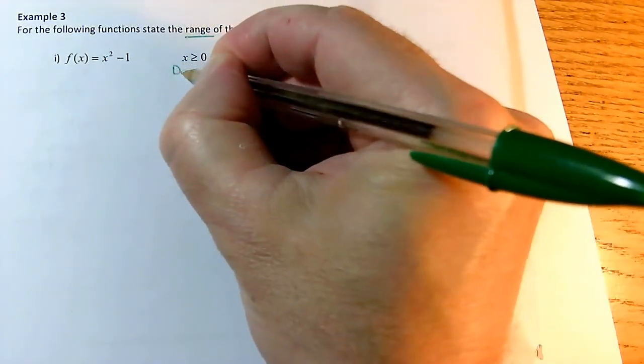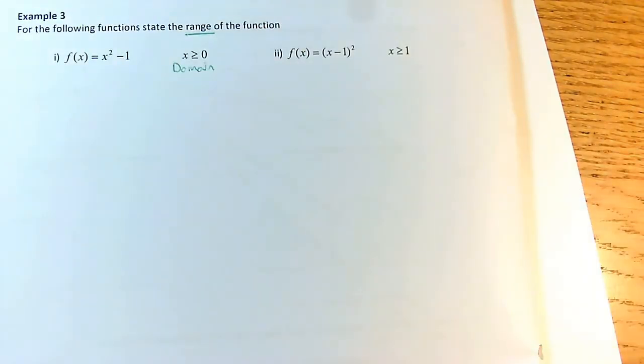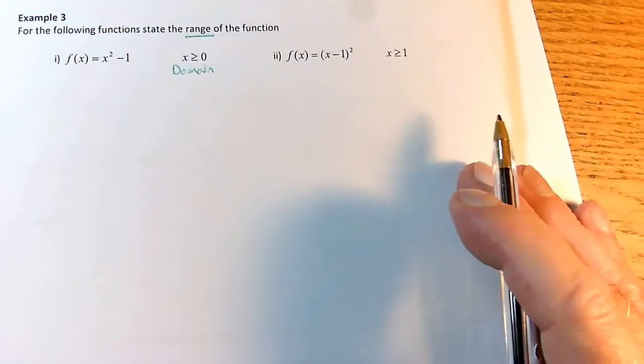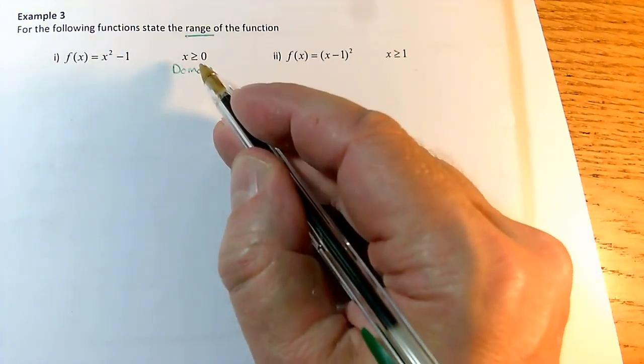So the domain for this one is going to be x is greater than or equal to 0. Whenever you've got a restricted domain, it introduces the fact we're going to have endpoints on our graph. The graph is going to begin when x is 0.